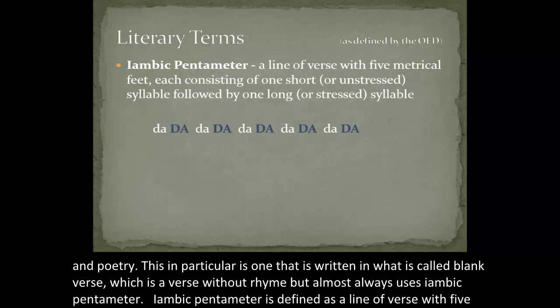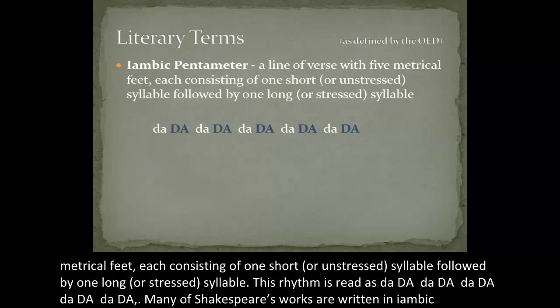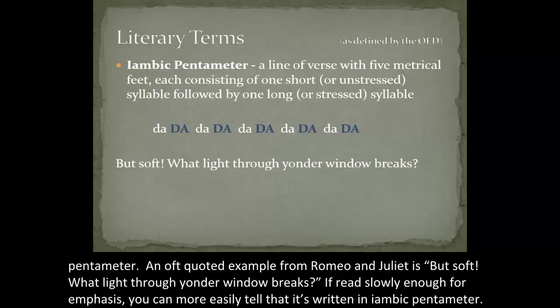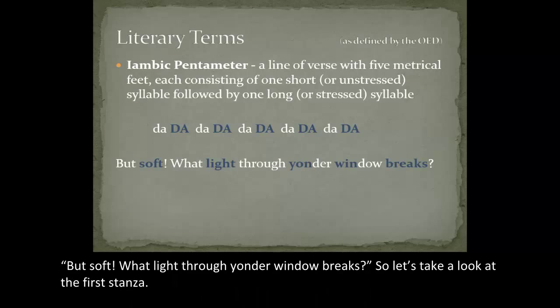Iambic pentameter is defined as a line of verse with five metrical feet, each consisting of one short or unstressed syllable followed by one long or stressed syllable. This rhythm is read as da-DUM-da-DUM-da-DUM-da-DUM-da-DUM. Many of Shakespeare's works are written in iambic pentameter. An oft-quoted example from Romeo and Juliet is 'But soft, what light through yonder window breaks.' If read slowly enough for emphasis, you can more easily tell it's written in iambic pentameter: 'But SOFT what LIGHT through YON-der WIN-dow BREAKS.'